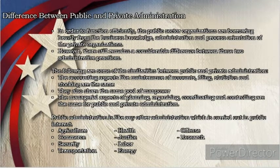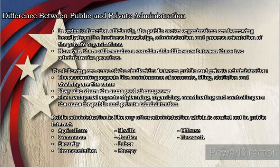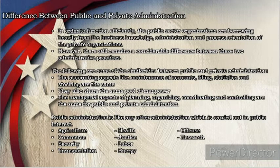Regarding the difference between public and private administration: in order to function efficiently, public sector organizations are borrowing heavily from the business knowledge, administration, and process orientation of private organizations. However, there remains a considerable difference between these two administrative practices. Similarities include: accounting aspects like maintenance of accounts, filing, statistics, and stocking; they share the same pool of manpower; and the managerial aspects of planning, organizing, coordinating, and controlling are the same. Public administration is carried out in public interest, covering areas such as agriculture, health, commerce, justice, research, security, labor, transportation, and energy.